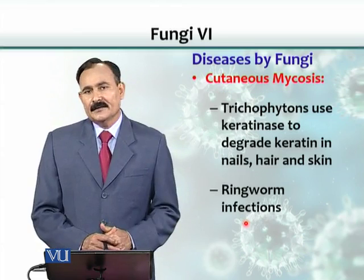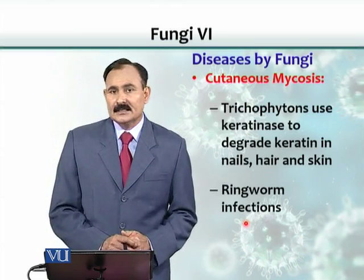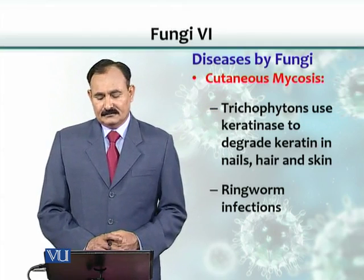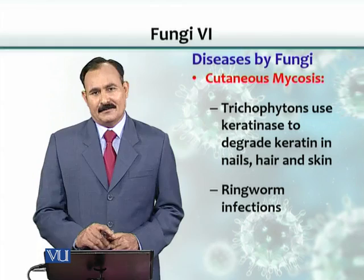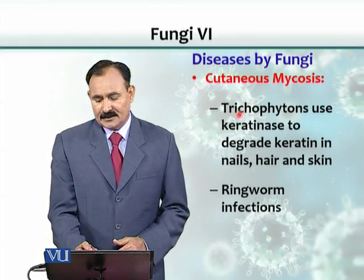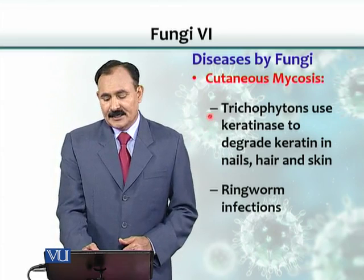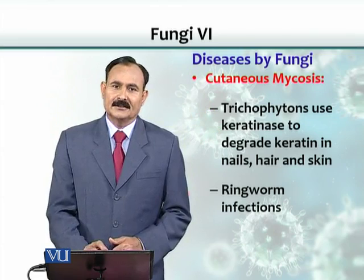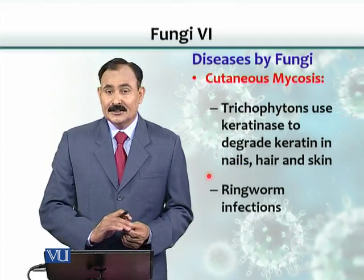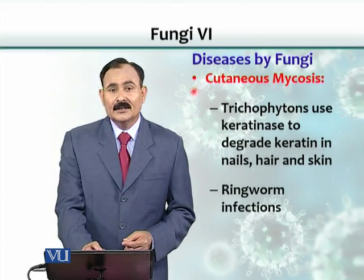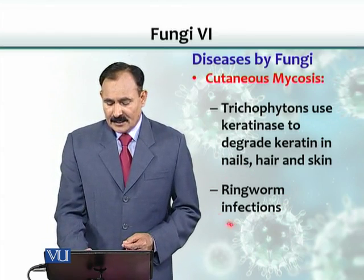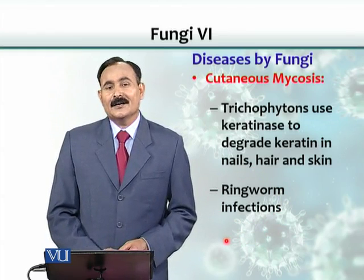Another kind of infection commonly seen is cutaneous mycosis, meaning skin infections. Trichophyton is very common — you might have noticed people with hair loss in a circular form, which is typically a fungal problem. Another example is Microsporum. These fungi have the ability to use keratin present in our nails, hair, and skin as a nutrient, which is why they stay superficial and can easily be treated. In common language these infections are also called ringworm infections, although it is not a worm — it is a fungus.